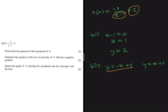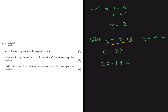We can already see that the gradient is -1. To find the equation we need a point to substitute. For the axis of symmetry, you substitute the asymptotes — we know x = 1 and y = 2, so that's the point we use. Substituting into the equation: 2 = -(1) + c, which gives c = 3. So the equation of the axis of symmetry is y = -x + 3.